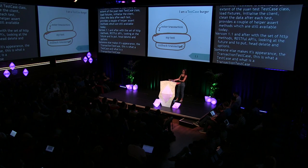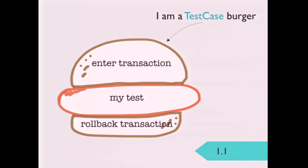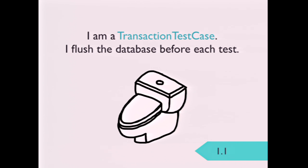The TestCase acts like a burger — it wraps each test in an atomic block. You enter a transaction, run the test, the test does messy things to your database, then you roll back the transaction to leave a clean slate for the next test. The TestCase class will prevent code from issuing any commits or rollback operations to ensure the final rollback restores the database to its initial state. TransactionTestCase is fine with you doing transactions — it cleans after each test by flushing the database. The previous version of the test case in 1.0 was doing exactly that.